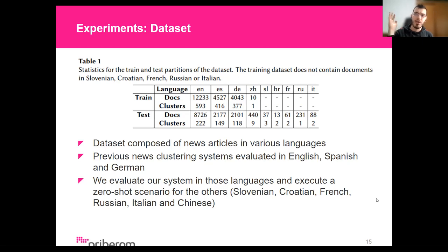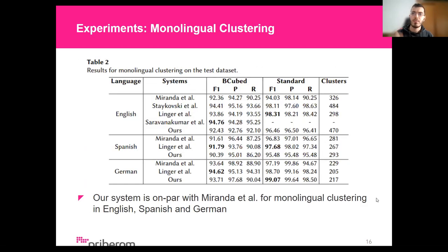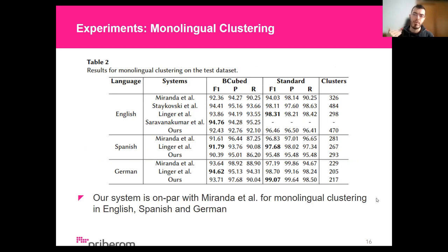Regarding evaluation metrics, we report the F1 score and the BCubed F1, as well as their respective precision and recall. Regarding our results for the monolingual clustering task, our system is on par with Miranda et al. on both English and German, but is surpassed by Wenger et al. on basically all metrics with the exception of standard F1 for German, where we have the best results. Our cluster size distribution roughly matches the other systems, with English having a greater cluster generation, indicating sparsity of the documents.